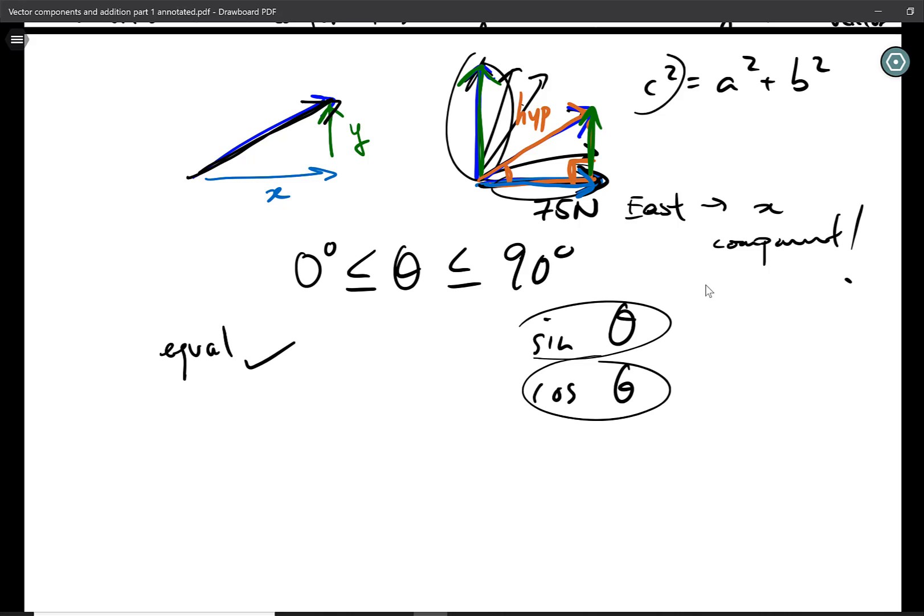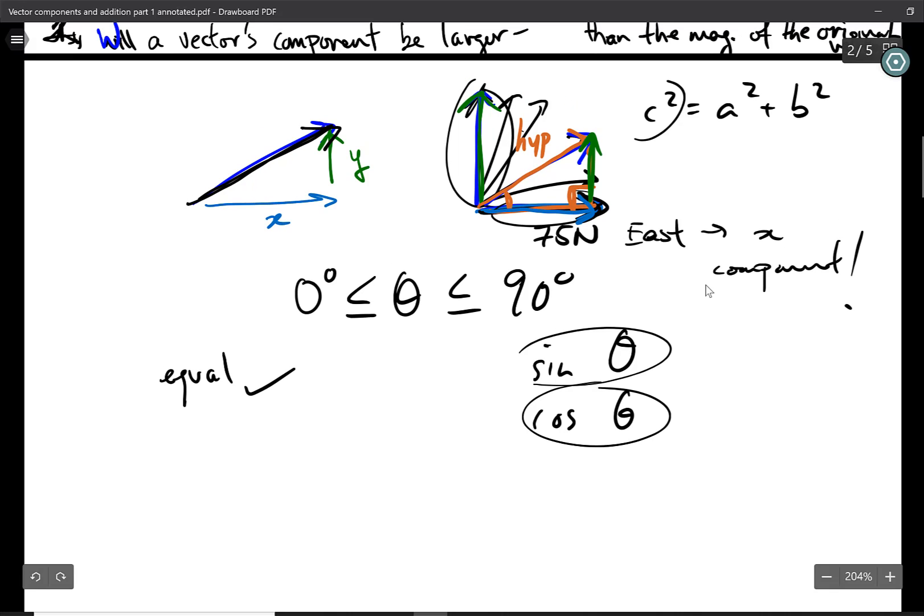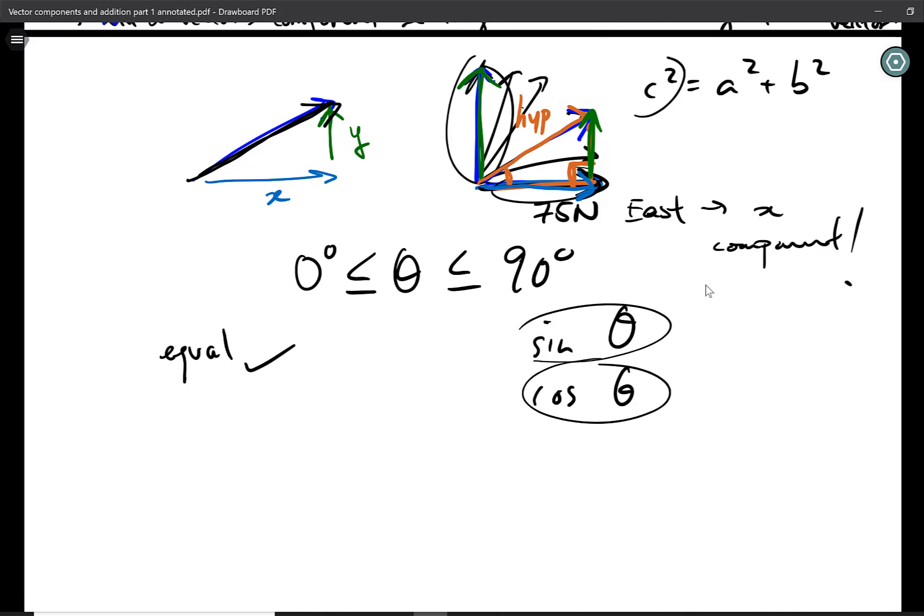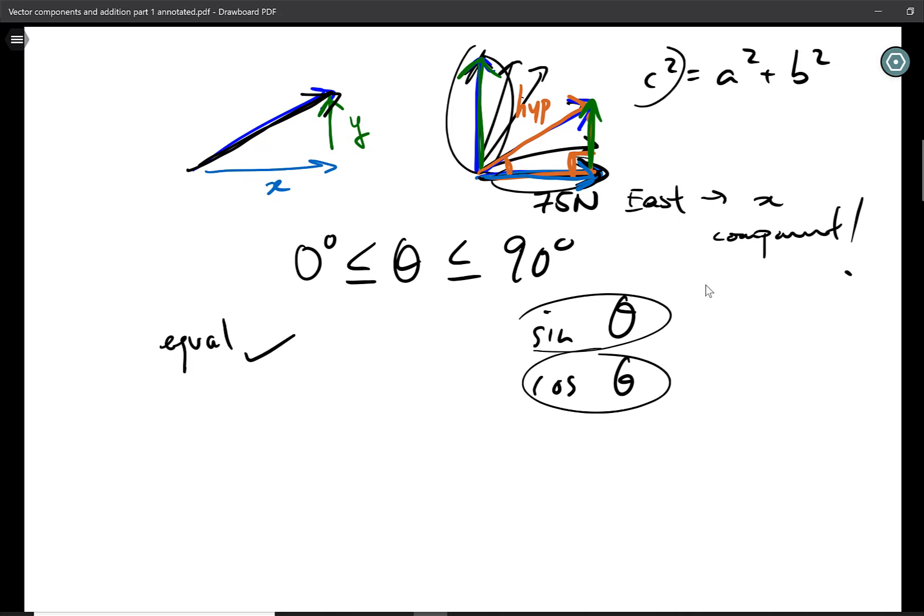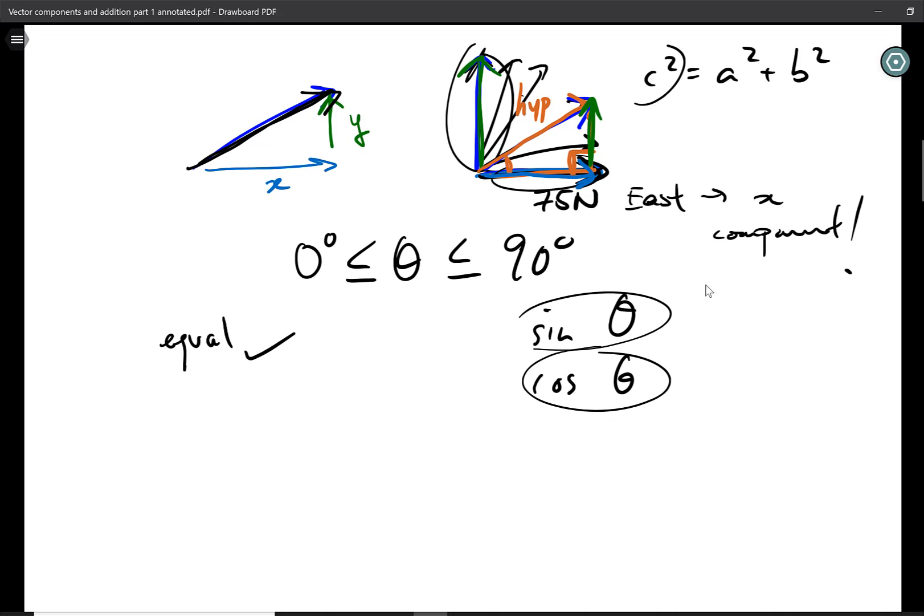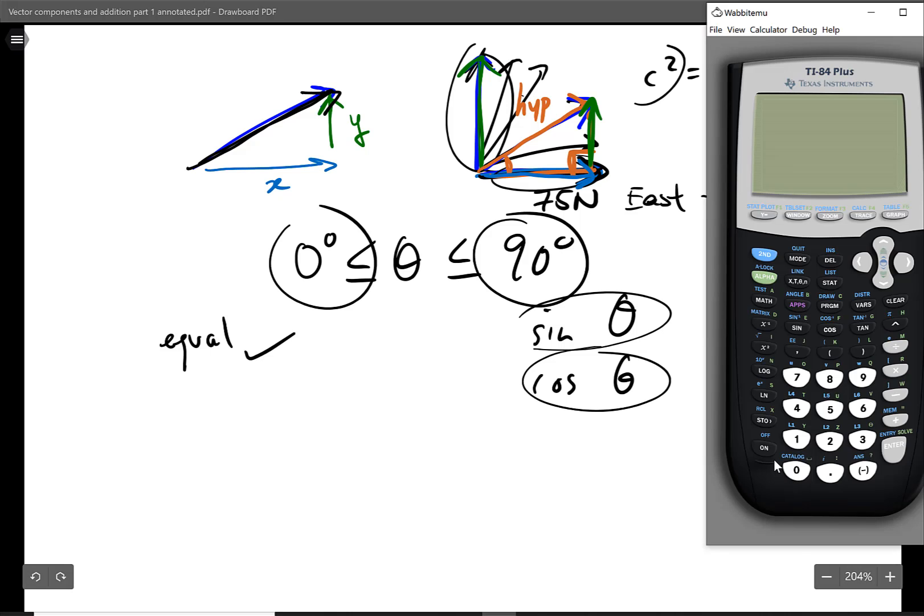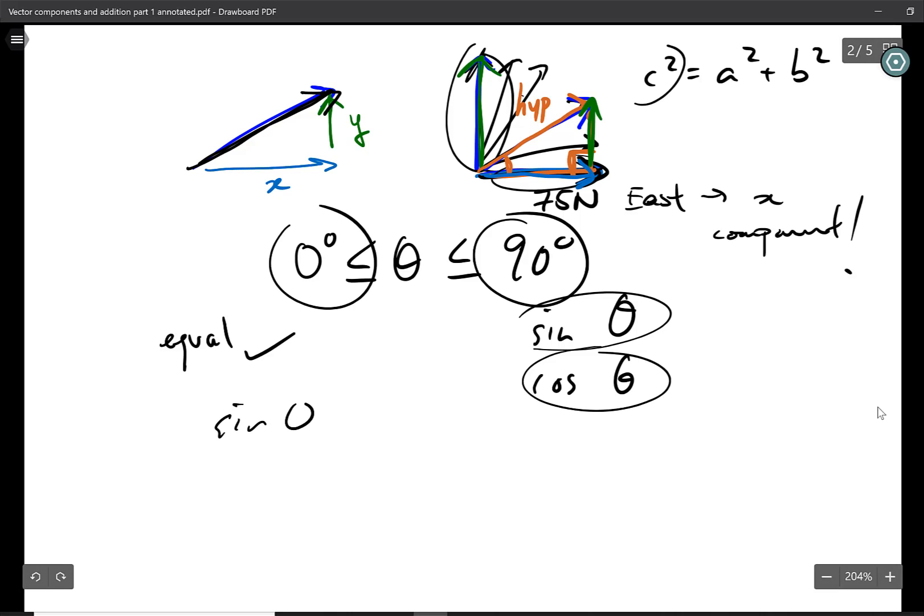And in order to get a larger number than the original magnitude is to multiply by a number that is greater than 1. So let's check cosine theta, sine theta from 0 degrees to 90 degrees. Let's see if we get any number that's going to be greater than 1. Let's check the extremities first. Let's check sine of 0. Sine of 0, notice we get 0.